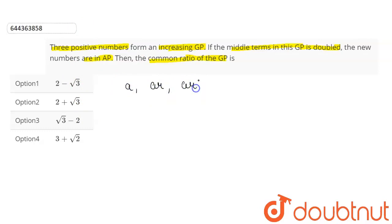a, ar, and ar square, which are in GP, it says that it is an increasing GP, so r will be greater than one. Now the question says if the middle term of the GP is doubled, which